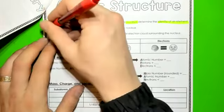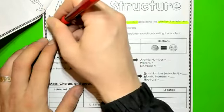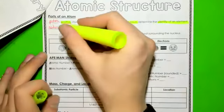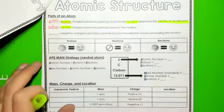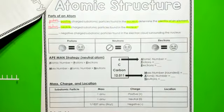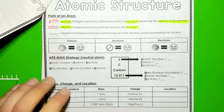Then we have our neutrally charged subatomic particles, which are our neutrons. As we said, neutrons are neutral, meaning they have no charge, but they're also found in the nucleus. Therefore, your protons and neutrons make up most of the weight of your atom because it's inside the nucleus.